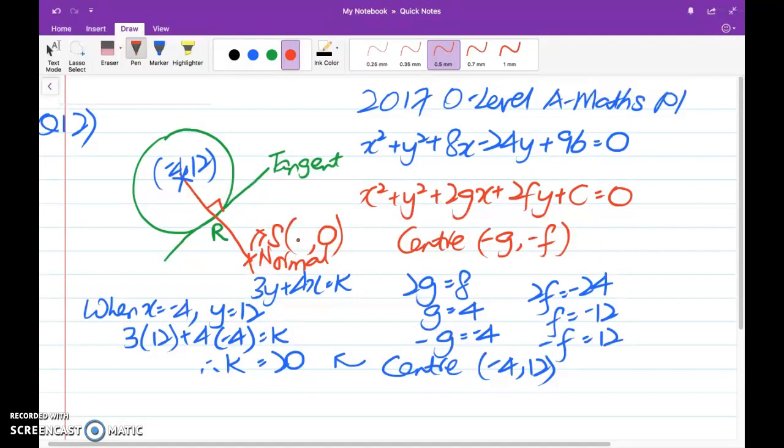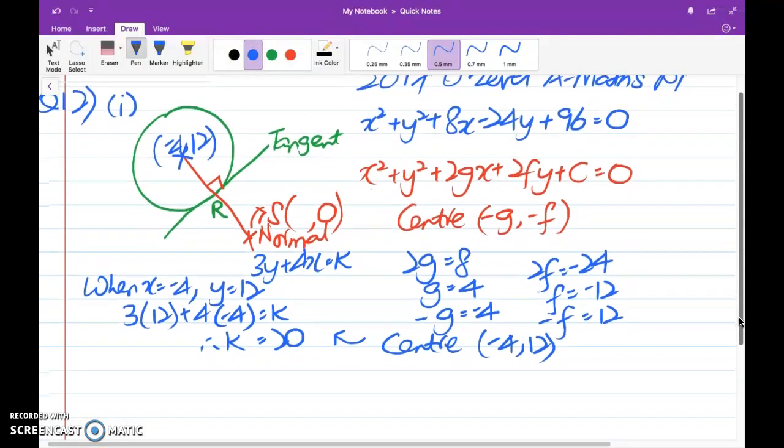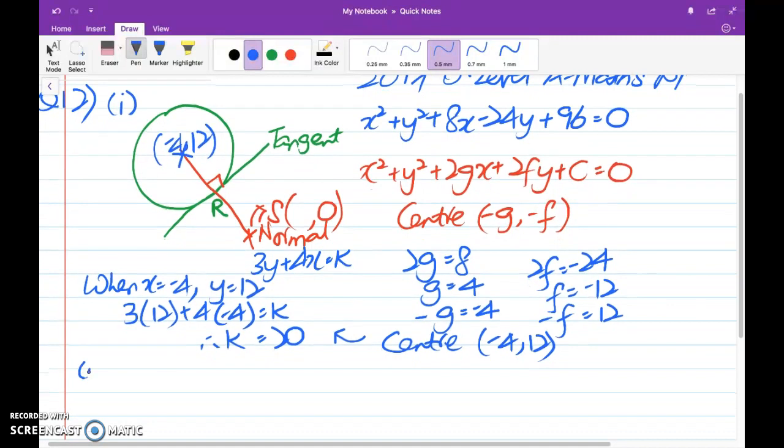So are we able to find this easily now that we know what is k? Definitely. So let me just put down. So this part here was part 1. Let me shift down the paper a little bit. Part 2. When y is equal to 0, substitute this into equation of the normal. 4x is equal to k. k we have found out is 20. So x is equal to 5. So therefore, you know the coordinates of S, point S, which is 5 comma 0.